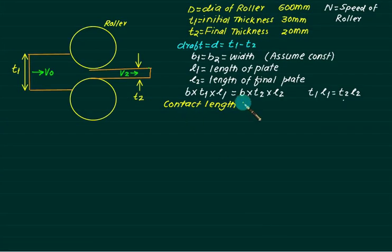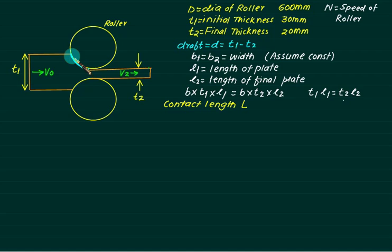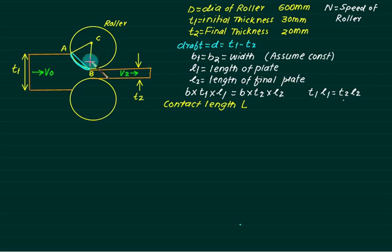Contact length is denoted by capital L — it is the arc length between entry and exit of the strip through the rollers. In reality the roller diameter is very large, so this arc is almost a straight segment. Let point A be the entry, point C the exit, and the roller center be C. Joining C to A and C to B, both lengths equal radius R. We enlarge this region: the contact length L is the short arc approximated as a straight line, and the angle formed at center C is called the bite angle α.